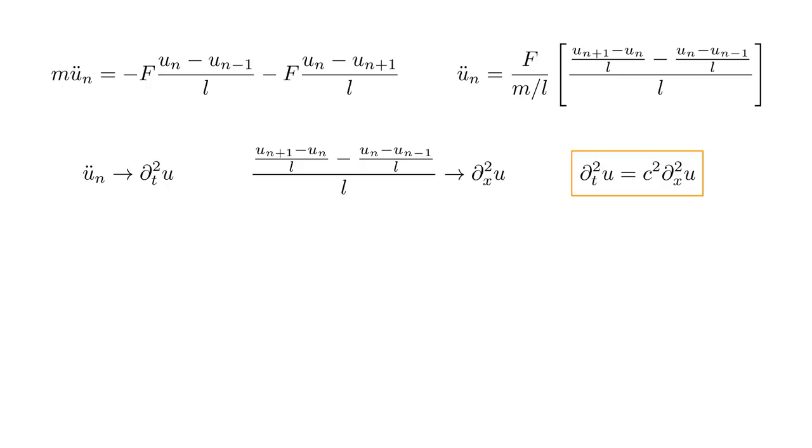Let's set the factor F over M over L equal to a constant C squared. C turns out to be the wave speed. Eventually, we'll apply these ideas to the electromagnetic field, in which case C will be the speed of light. Then, we obtain the one-dimensional wave equation. Essentially, curvature in time of the field equals speed squared times curvature in space of the field.